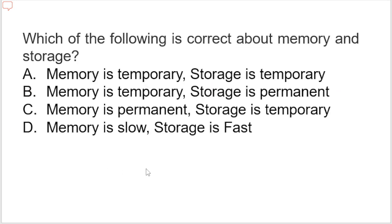Next question: which of the following is correct about memory and storage? The correct option is B — memory is temporary storage, permanent storage is permanent. Data stored in storage is permanent and holds high capacity. In a computer system, memory is RAM which stores data temporarily, and RAM contains everything currently running on the computer.